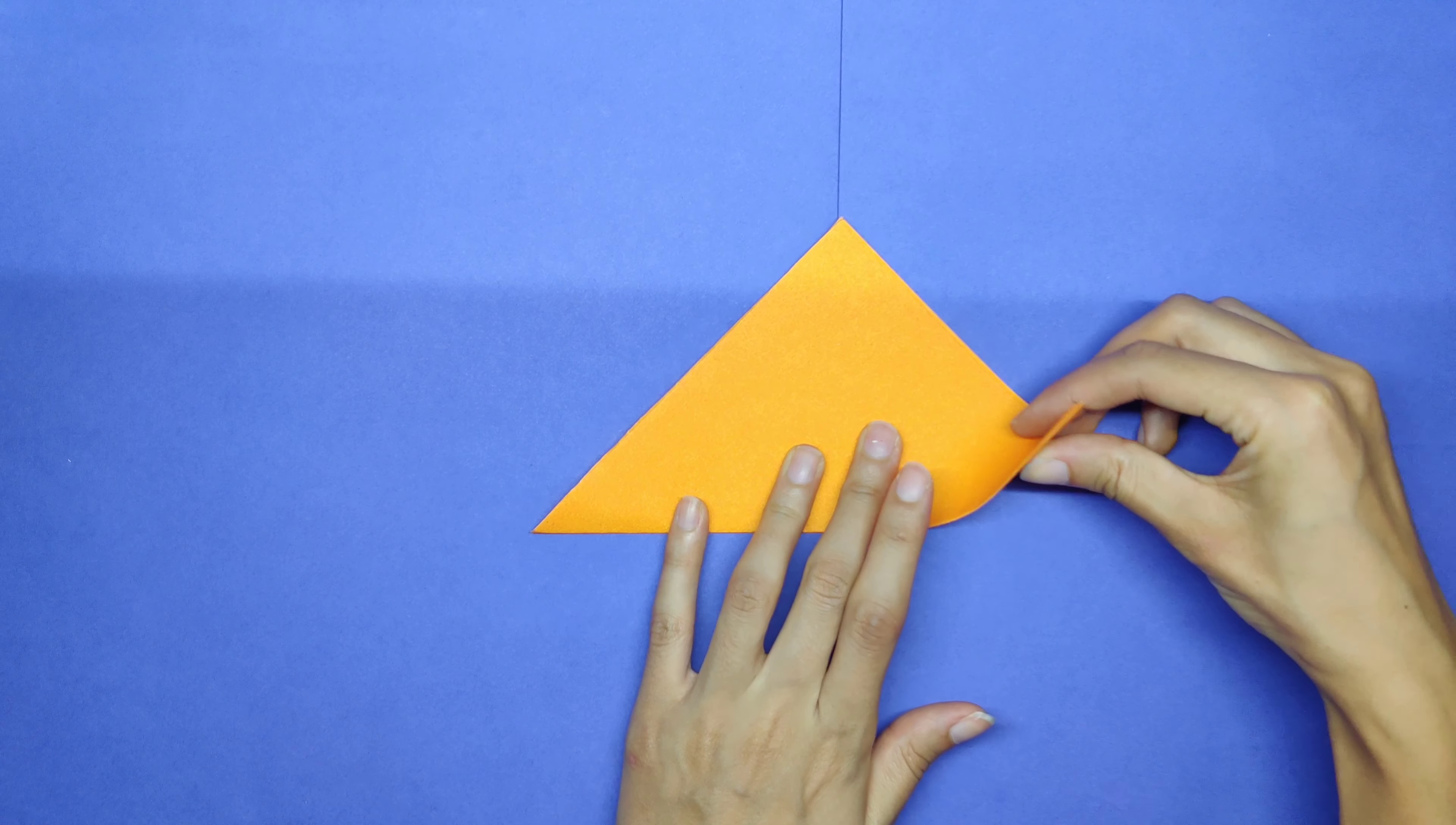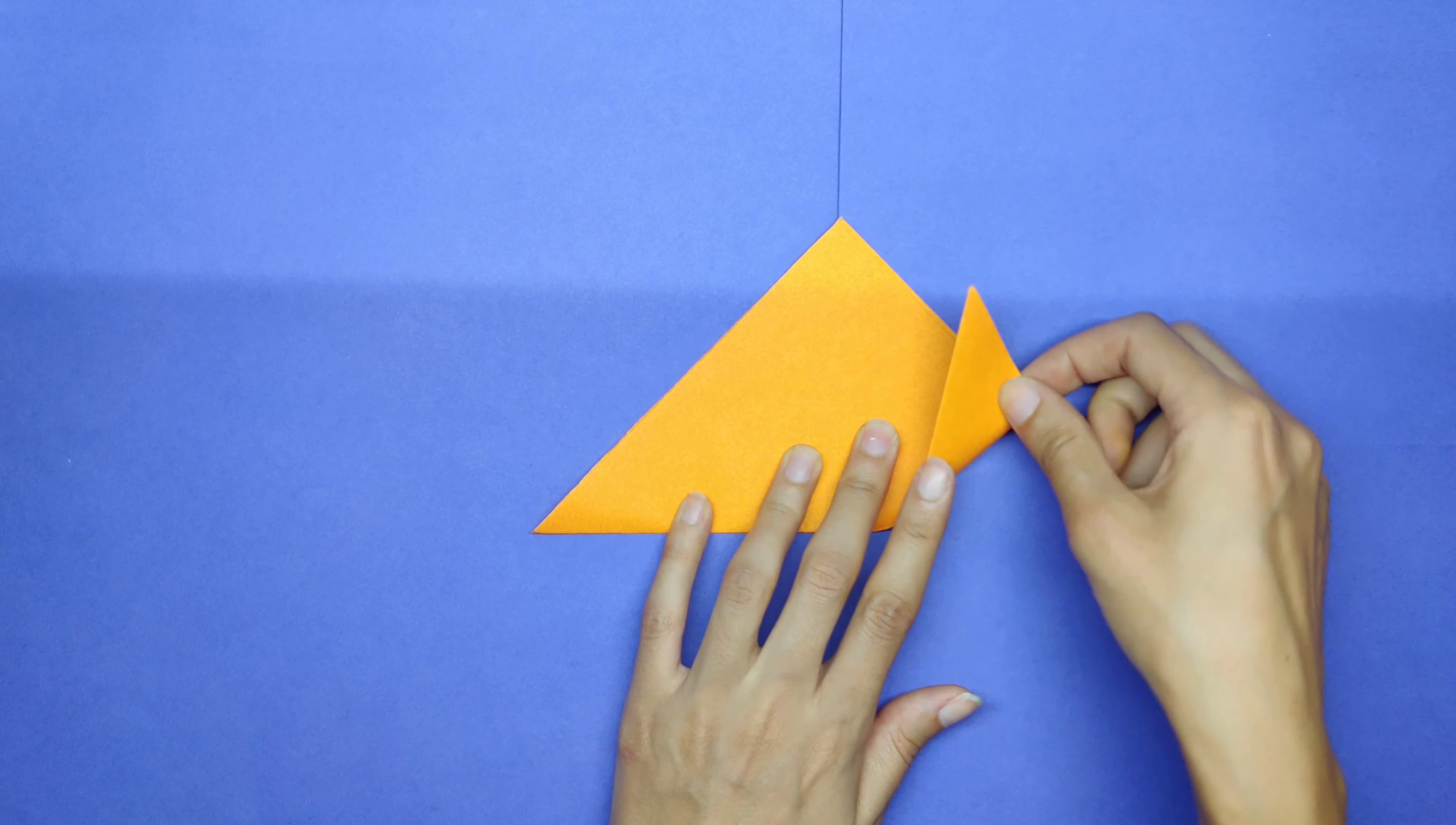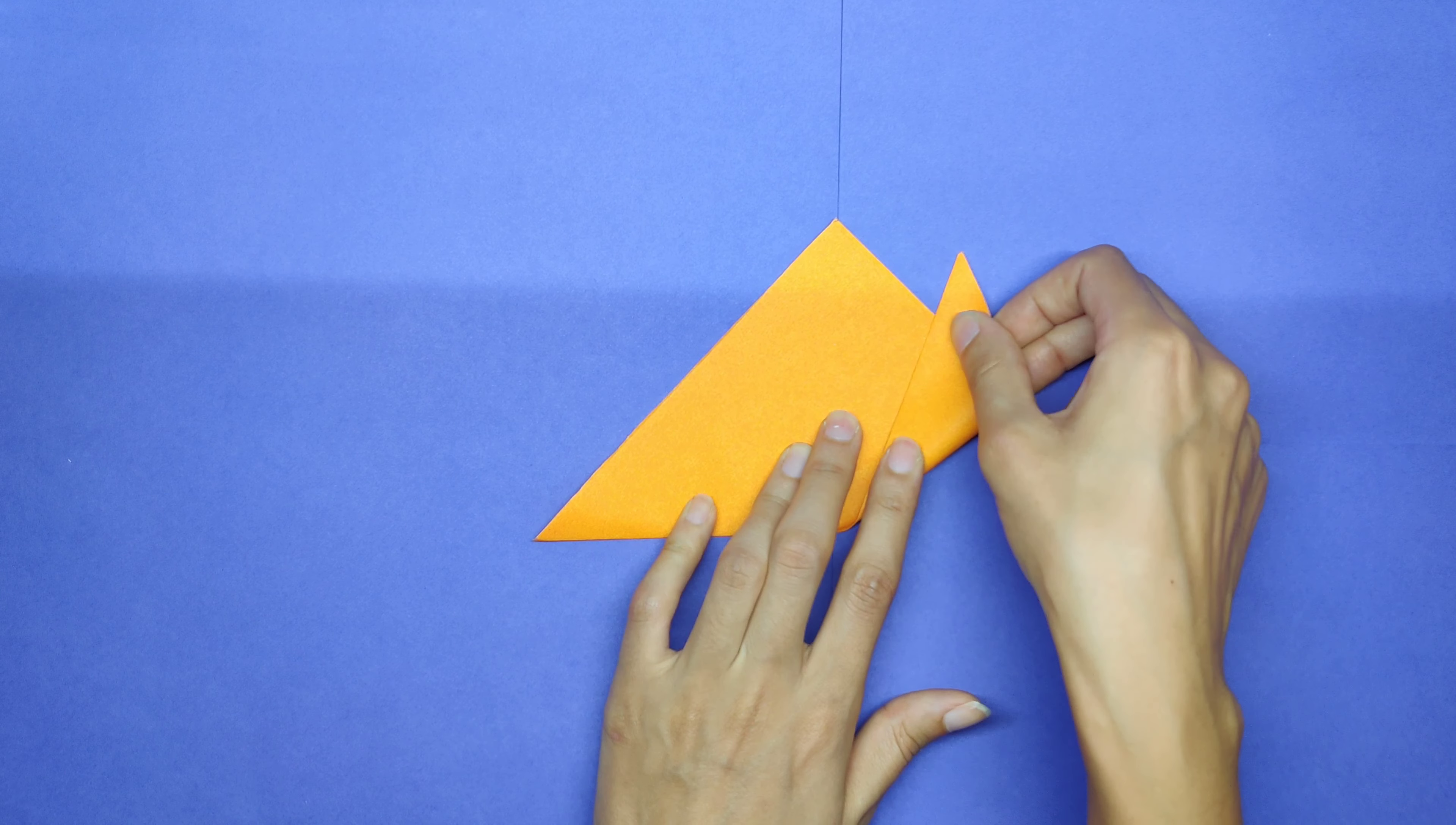We are going to flip them and turn them up. Make sure it looks like a little tiny mountain here. But inside, we want these two mountains, little cute triangles, to be the ears of the cat. So we want them to show, okay?